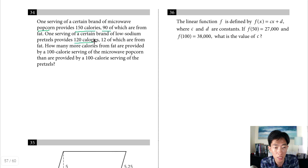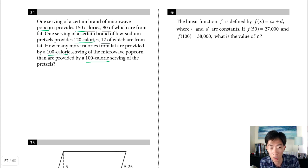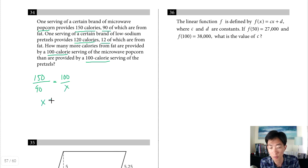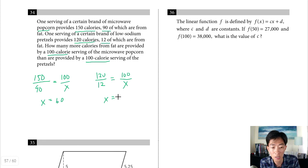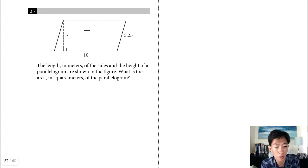Question 34: popcorn provides 150 calories with 90 from fat; pretzels provide 120 calories with 12 from fat. For 100-calorie servings: popcorn gives (90/150) times 100 equals 60 fat calories; pretzels give (12/120) times 100 equals 10 fat calories. The difference is 60 minus 10 equals 50 fat calories.